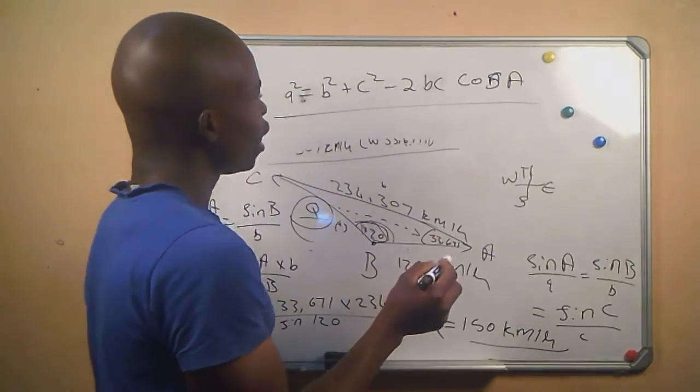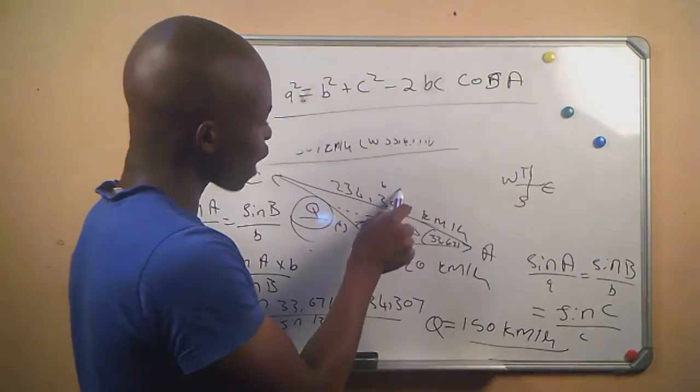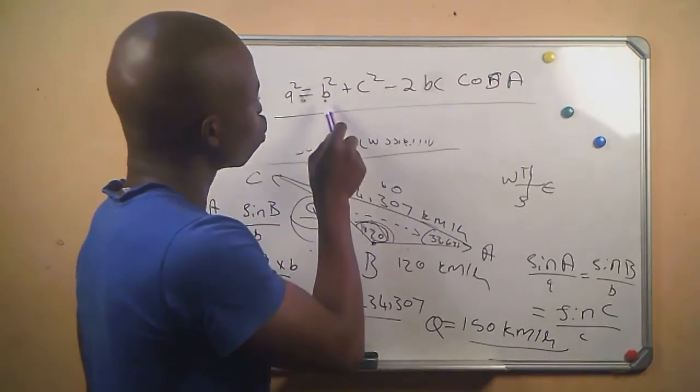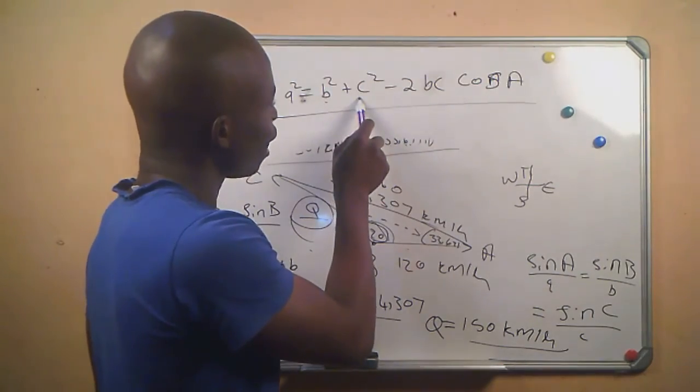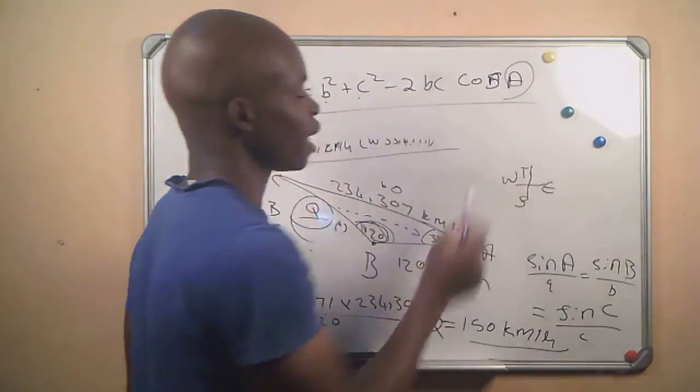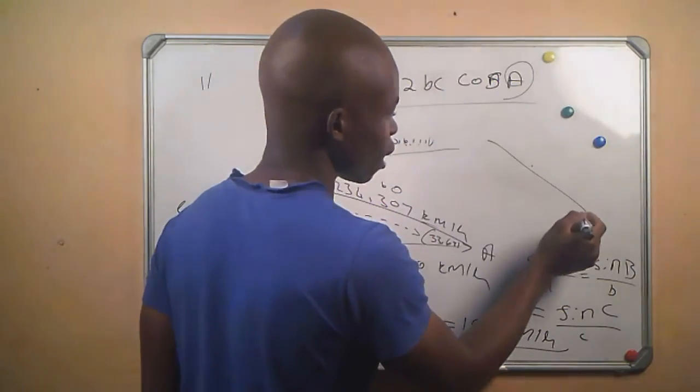And then we know that we use our cosine rule if we have two sides, two sides, and the angle of the side that you are looking for. If this is our triangle.